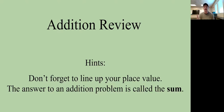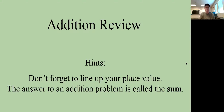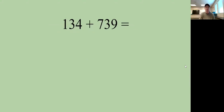First, addition. Number one, don't forget to line up your place value — the ones place needs to be right above the ones place. The second thing you need to know is the answer to an addition problem is called the sum. So if you have a question that says 'find the sum of two and two,' that means you're going to add two plus two, and the sum is four.